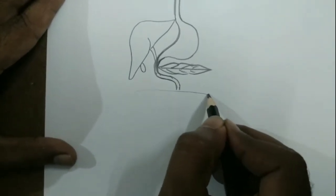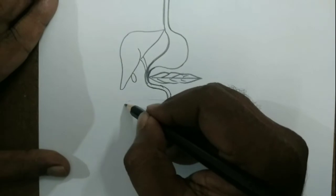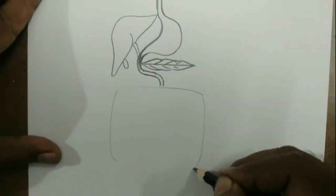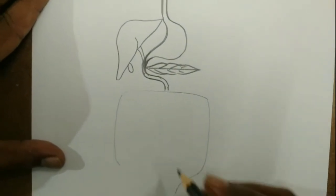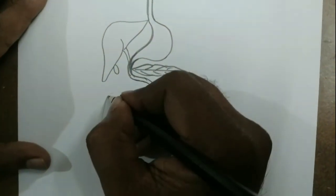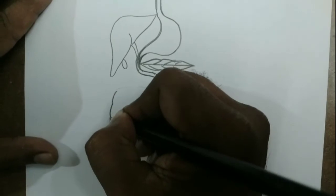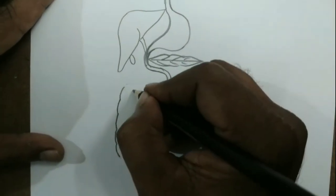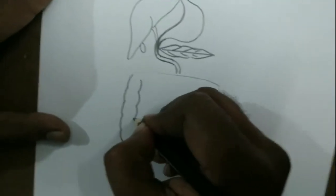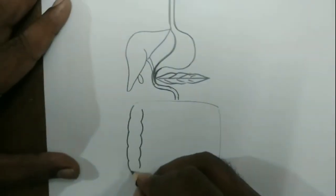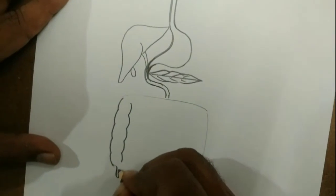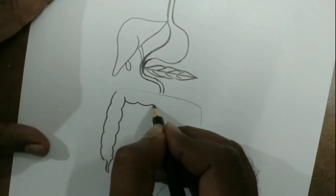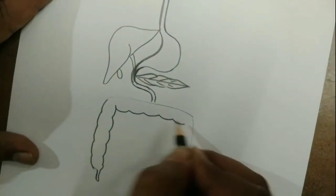We draw some lines like this. Now we have to draw the large intestine like this. At the end of this side we have to draw the appendix, draw like this.